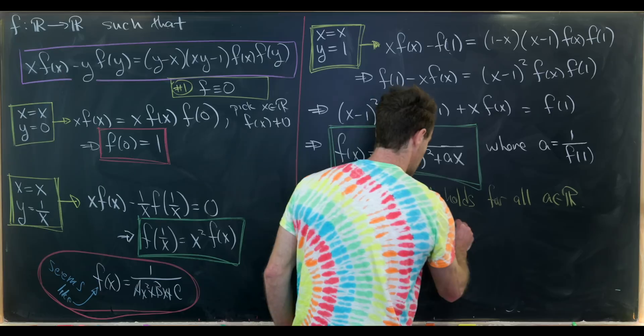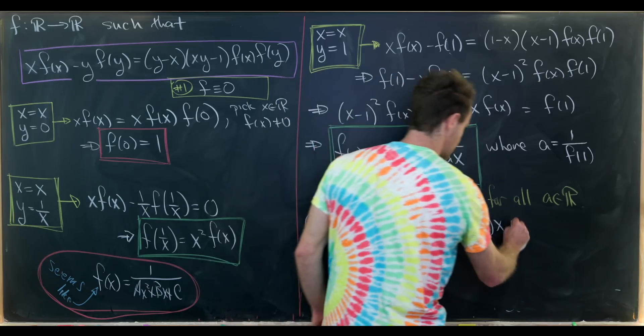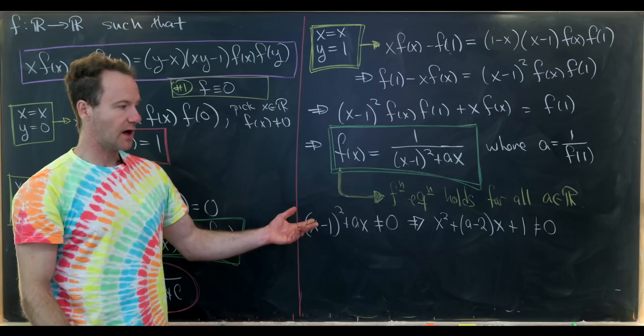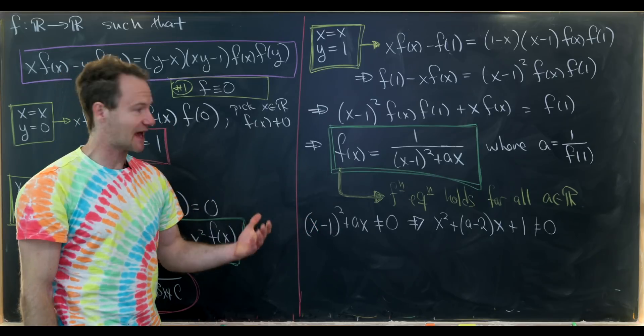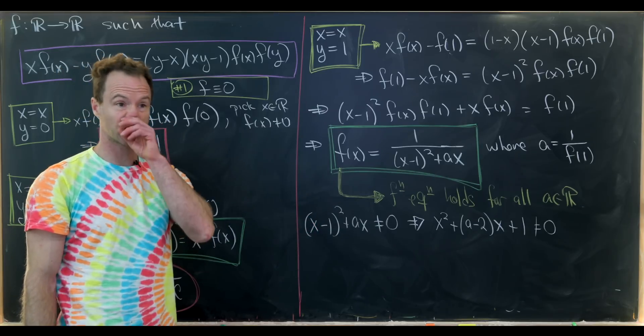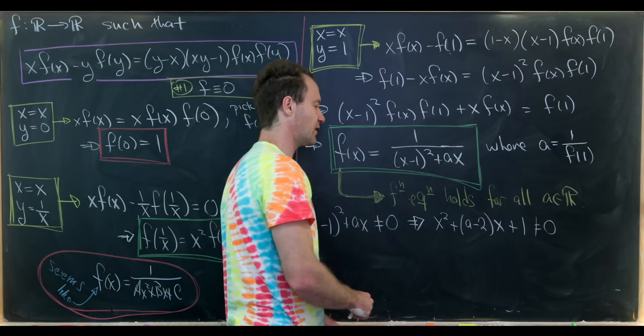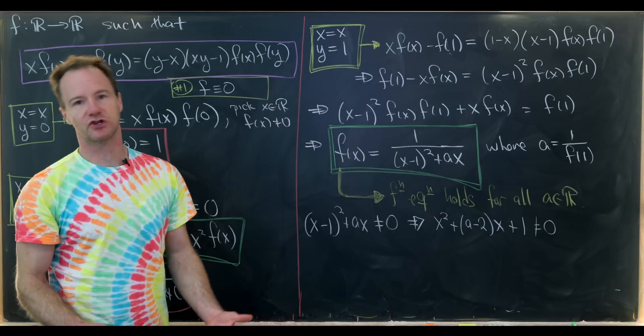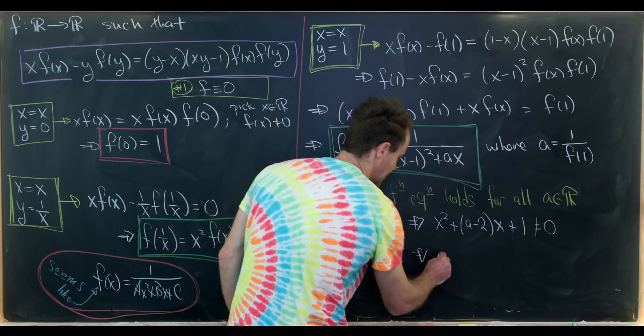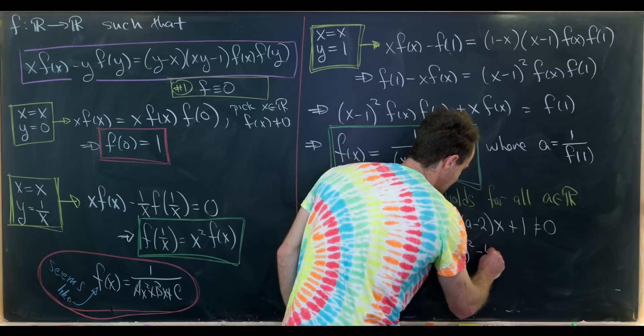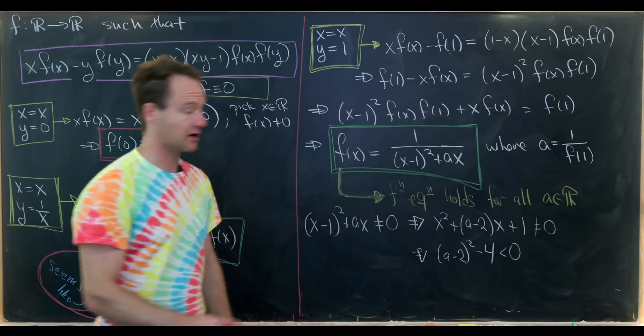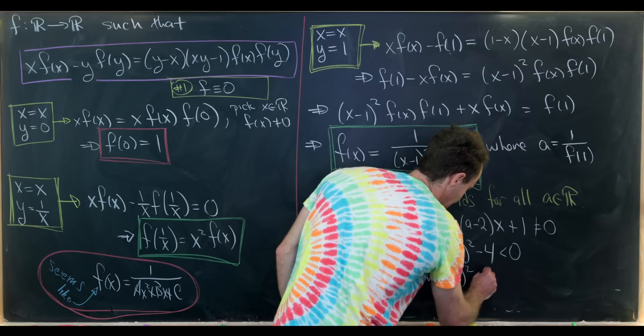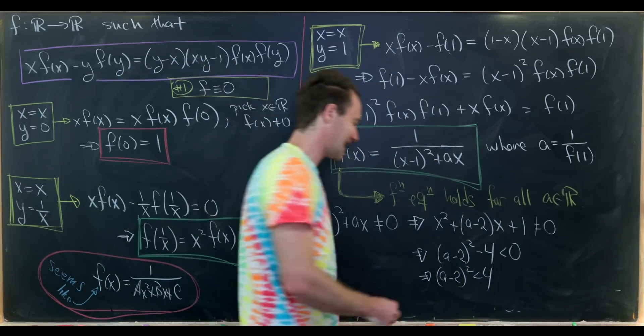But when does a quadratic equation not have a real root? Well that's exactly when the discriminant is negative. So we want the discriminant to be negative. Remember that the discriminant is the thing inside the square root when we do the quadratic formula. So that means we need (a-2)²-4 to be less than 0, in other words we need (a-2)² to be less than 4.